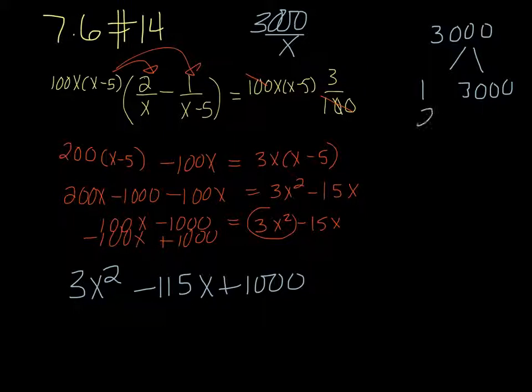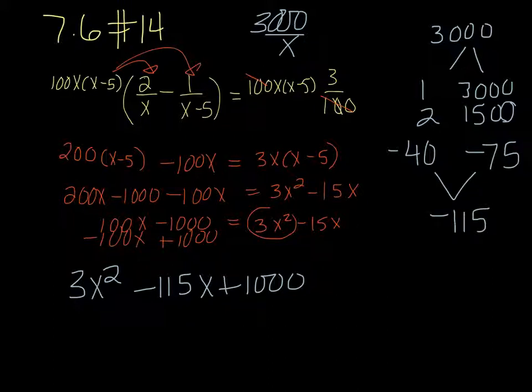And you get a whole bunch. And then 2 and 1,500. I'm not going to continue writing them all down because we can see that there's no way that we're going to get 115 by adding or subtracting these numbers. So we need to get some numbers that are a little bit closer together. So I scroll down and finally I get to 40 and 75. So it's a bit of a bear. But 40, if I make these both negative, minus 40 and minus 75 is negative 115. So those are our values that we're going to split this up into.